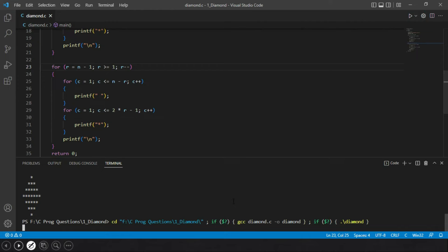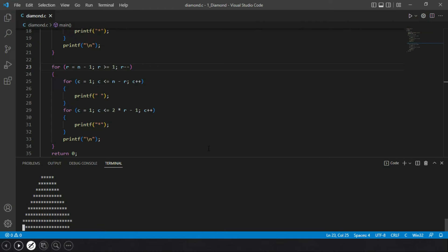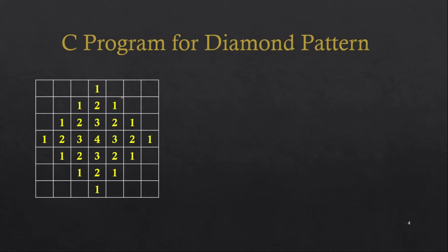Let's test it for 10 rows — here we go, the diamond pattern works correctly for 10. Now I'm going to show you how to print numbers instead of stars in the diamond pattern.